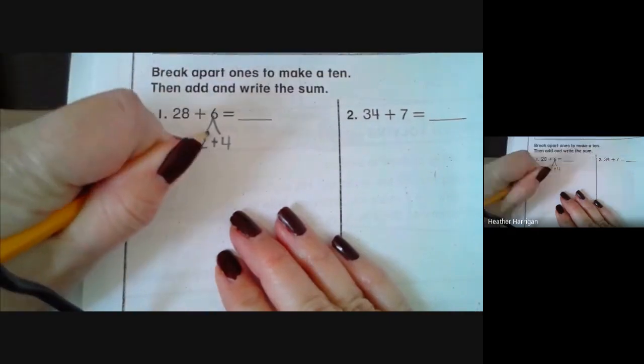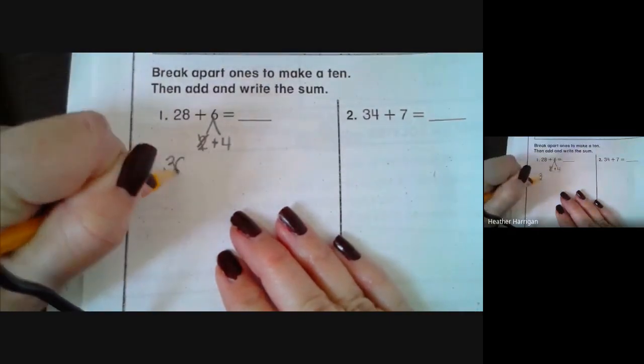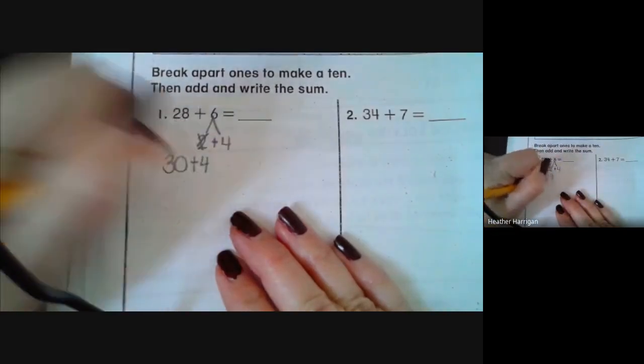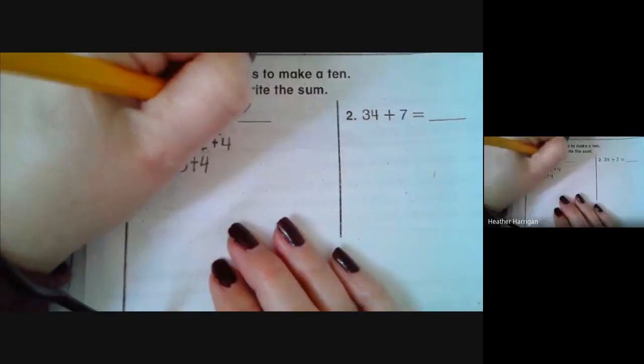So now I have them cross out the 2, make the 28 a 30, and then they say 30 plus 4. That makes it so much easier to add. 30 plus 4 would equal 34.